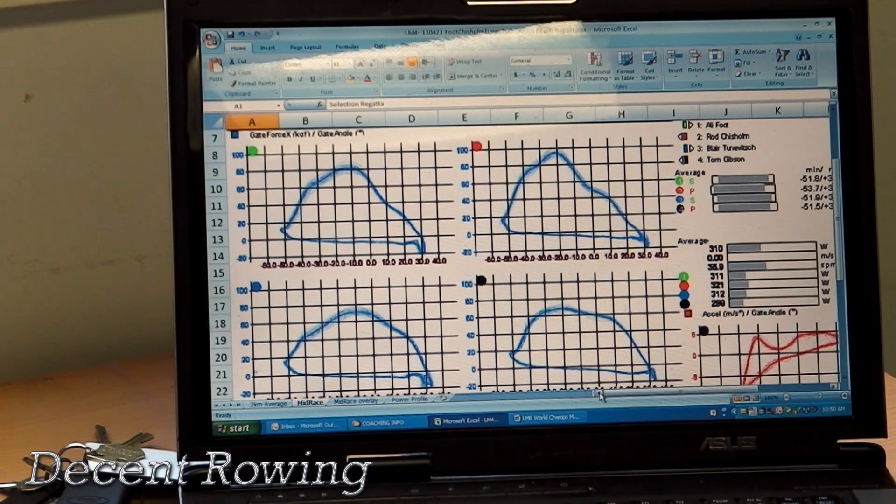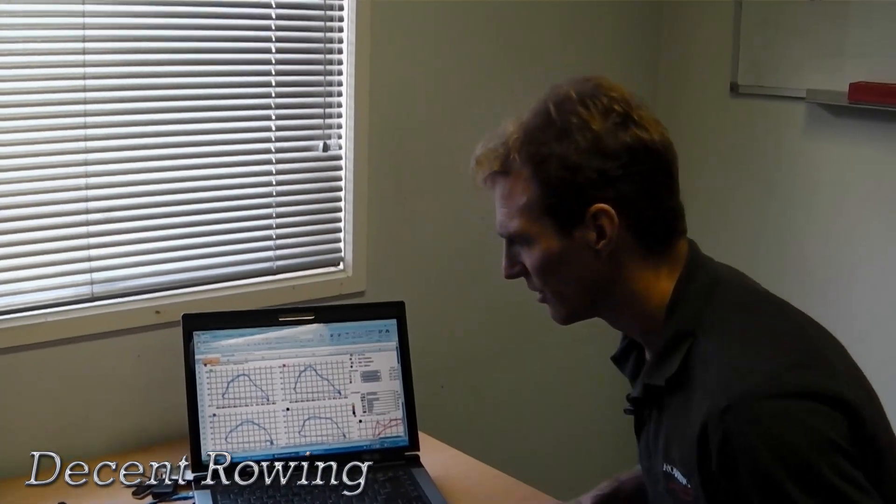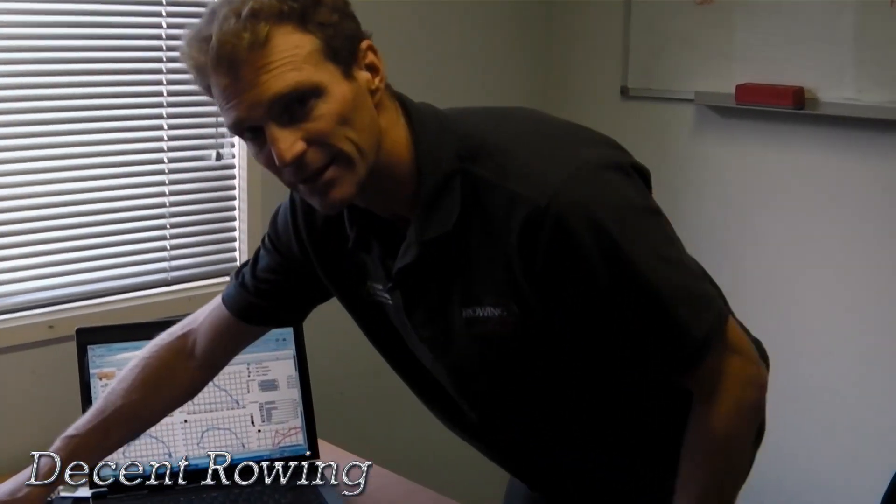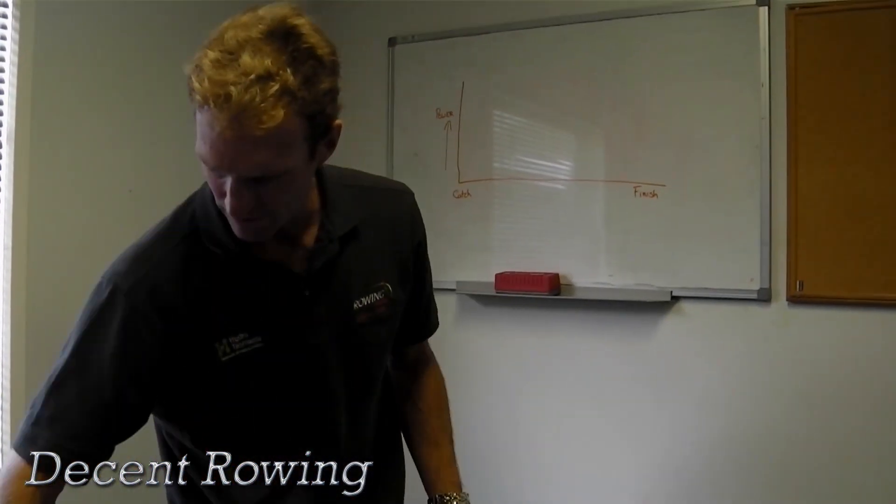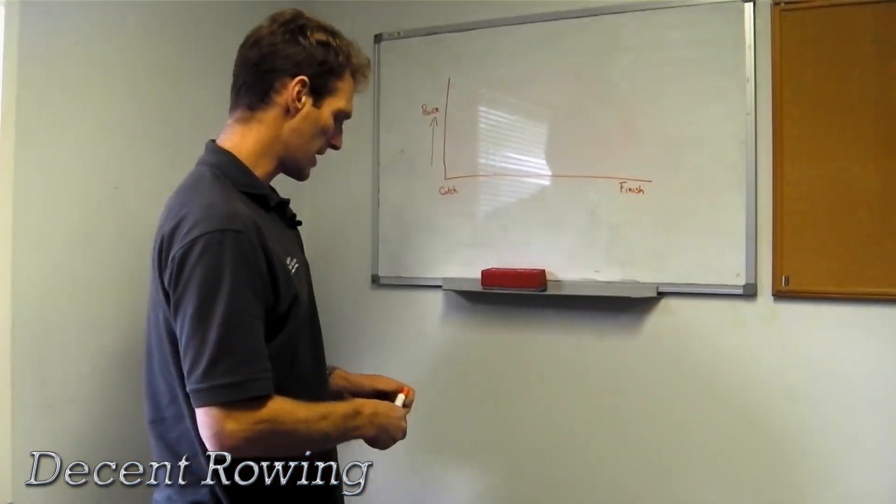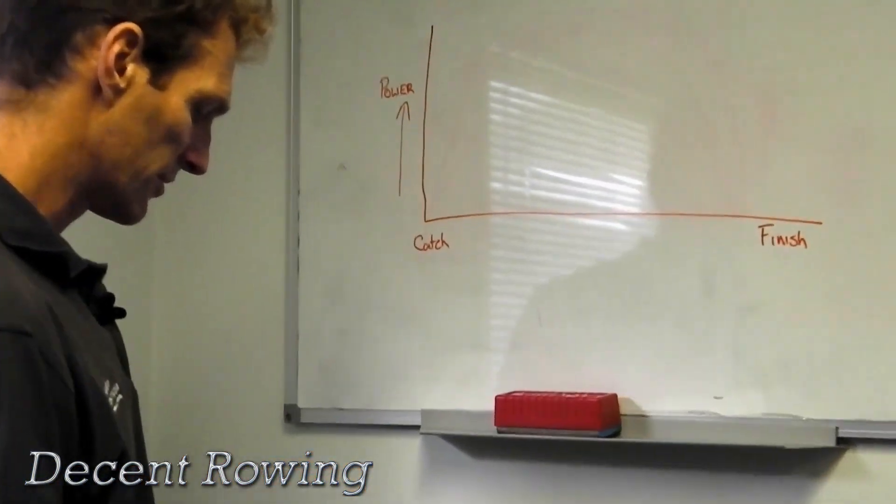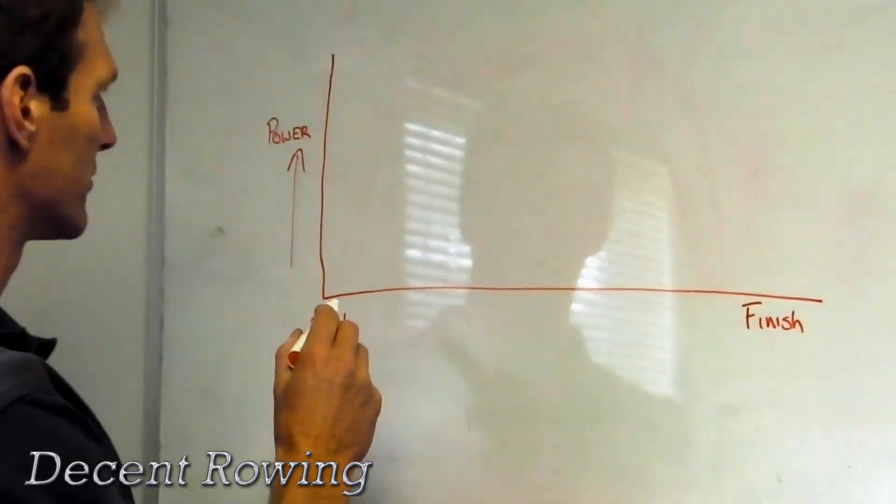I'll take an example on the whiteboard to look at how we may look at who rows in the bow or in stroke of a pair. You would look to see if someone rows in the stroke seat of a pair.